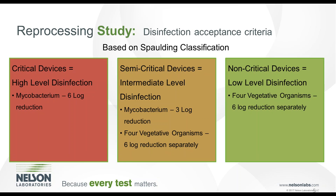For a critical device requiring high level disinfection, the requirements are pretty much the same across the U.S. and Europe: a six log reduction of mycobacterium species. For semi-critical devices requiring intermediate level disinfection, it's the same organism but only a three log reduction, plus four vegetative organisms requiring a six log reduction. For non-critical devices, low level disinfection requires four vegetative organisms with a six log reduction.